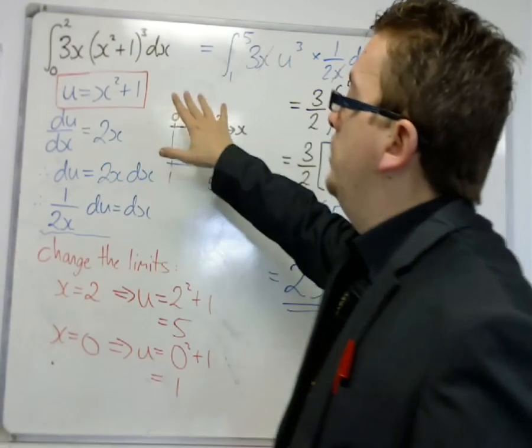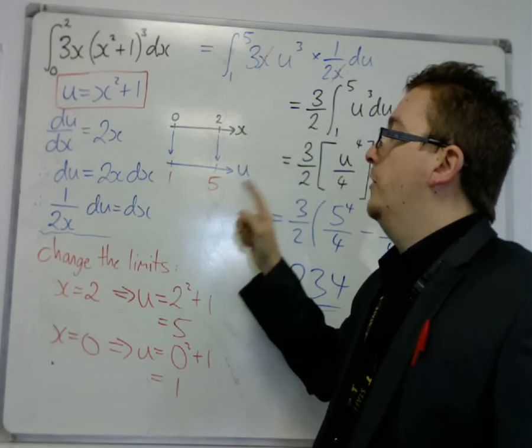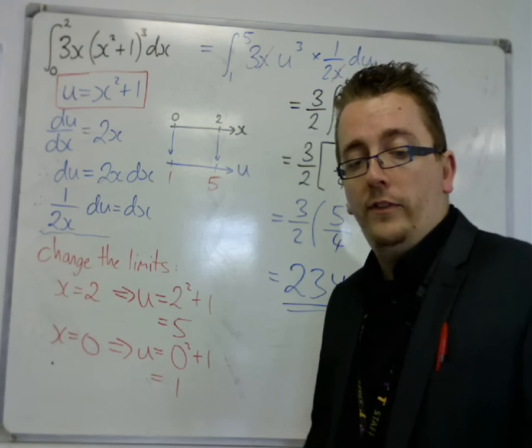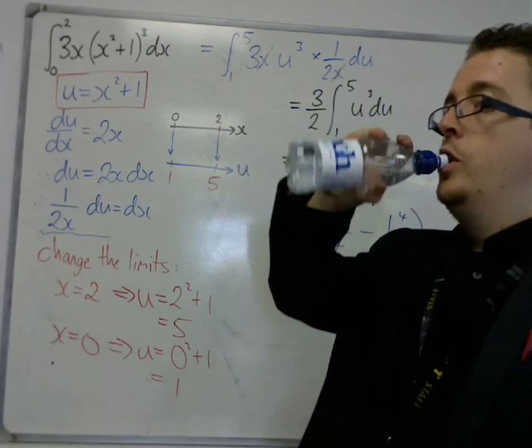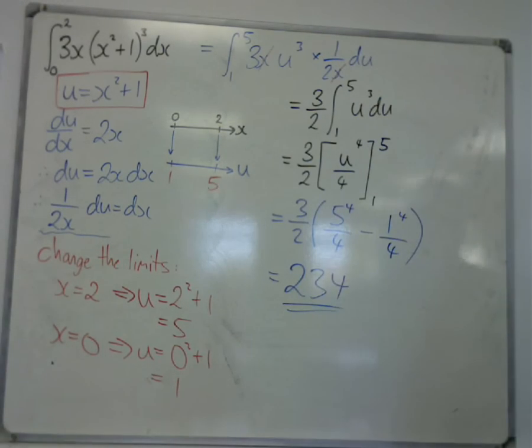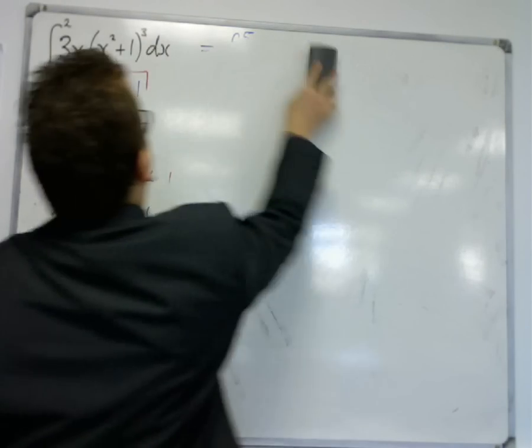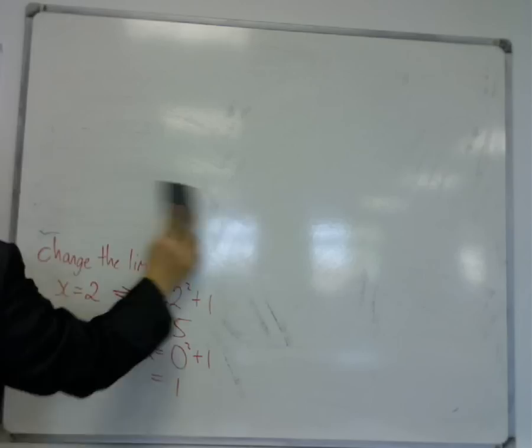So here is an example of using integration by substitution with a change of limits. So make sure you understand that, in order to change the limits, this is why we're doing it. Because we're now integrating over the u-axis and not the x-axis. So let's look at another example so we can see it again, reiterate the issue.